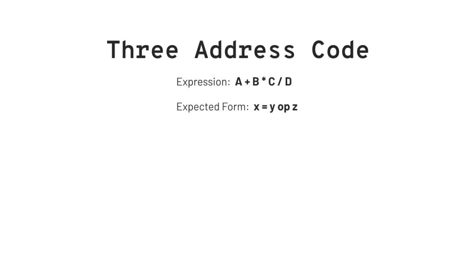To write this expression in the form of x = y op z, we have to identify two operands. We can start with b * c or c / d, as both of them hold higher precedence over plus. So let us start with b * c. We can write t1 = b * c, where t1 is the reference to the result of b * c.